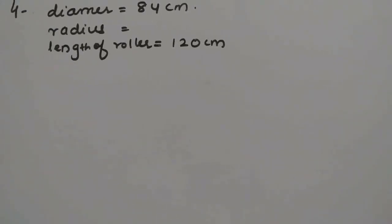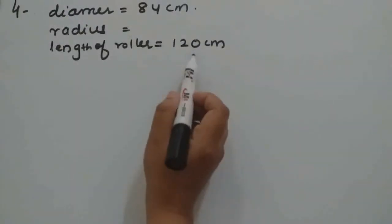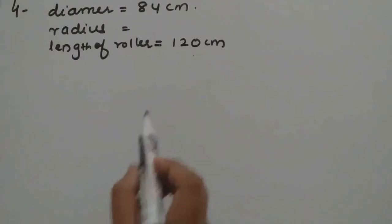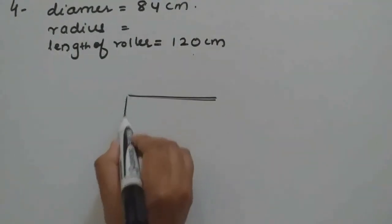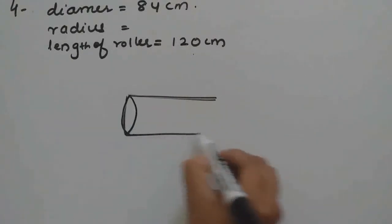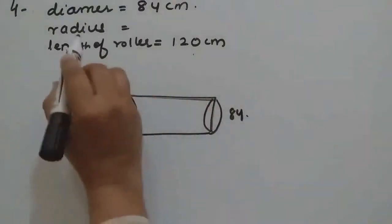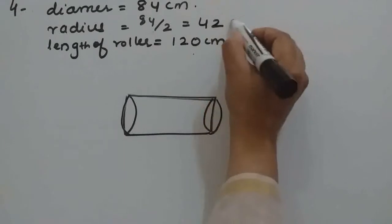Question number 4. Diameter of a roller is given as 84 cm, length is 120 cm. It takes 500 complete revolutions to move once over to level a playground. Find the area of the playground. We know the roller is in the shape of a cylinder. Diameter is given, so from diameter we will find radius: 84 by 2, that is 42 cm.